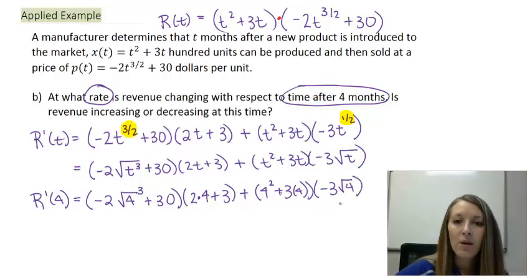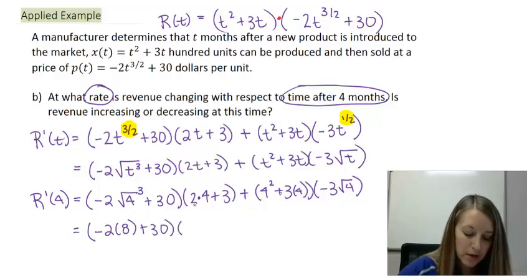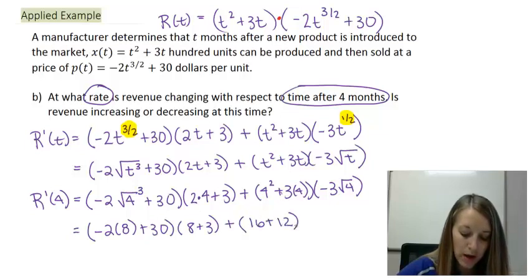Now I have something quite messy here, but it doesn't really matter whether I would have simplified it this way or whether I would have simplified it with t's. It would have all been a little bit messy. So let's go ahead and try and simplify this. I have -2. The square root of 4 gives me 2. If I take that to the third power, that gives me 8 plus 30. Here, 2 times 4 gives me 8 plus 3 plus 4² is 16. 3 times 4 gives me 12. And -3 times the square root of 4. Root 4 gives me 2. So if I multiply that by -3, that gives me -6.